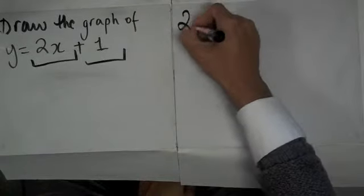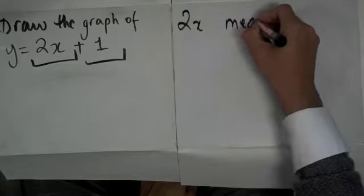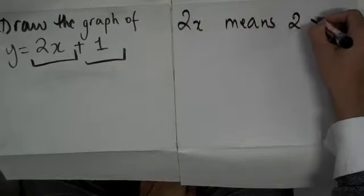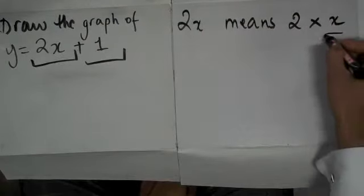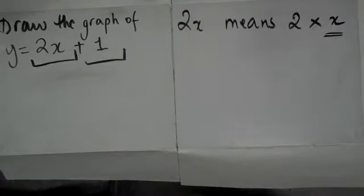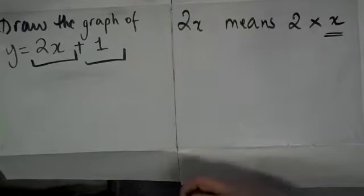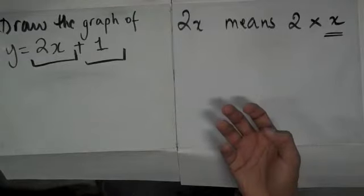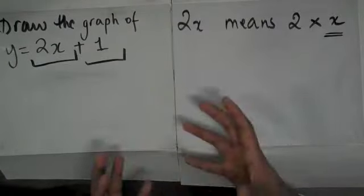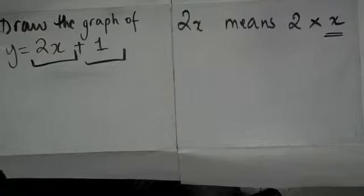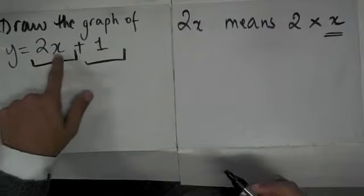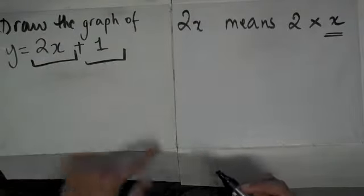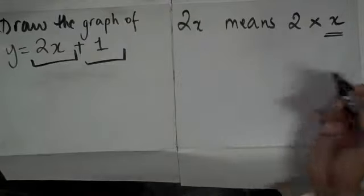Remember that 2x means 2 times x, and x is called a variable. What I mean by a variable is that I can just replace it with any numbers and I can get my answer. Let me show you what I mean by that.